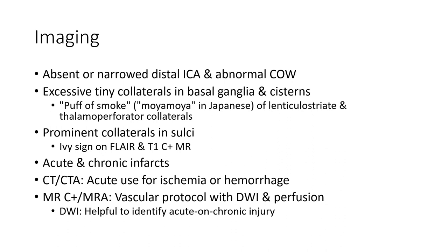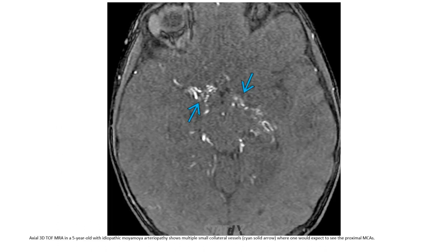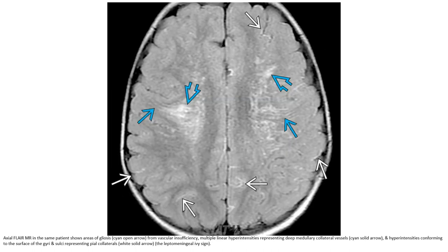MRI with vascular protocol including DWI and perfusion imaging is recommended; DWI is helpful in identifying acute on chronic injury. This 3D TOF MRA in a five-year-old with geographic Moyamoya angiopathy shows multiple small collateral vessels where one would expect to see the proximal MCA. In the same patient, areas of gliosis and cysts from vascular insufficiency are noted, with multiple linear hyperintensities representing deep midline collateral vessels.